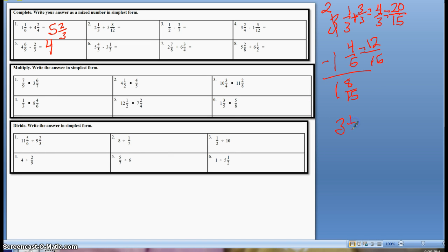That quick, simple, surefire way could look like this. I'm going to rewrite my problem here: 3 and 1/3 take away 1 and 4/5. I can convert both this mixed number and this mixed number into improper fractions. Let's go ahead and do it that way.